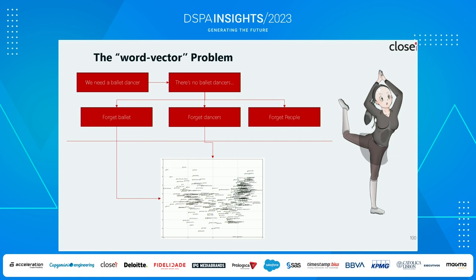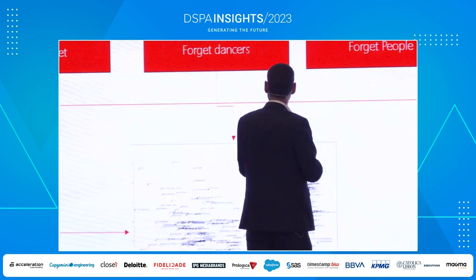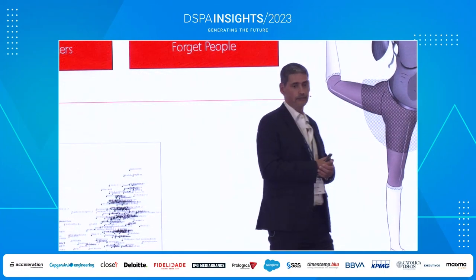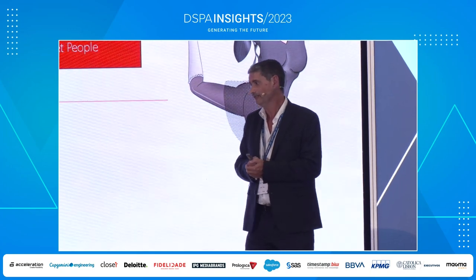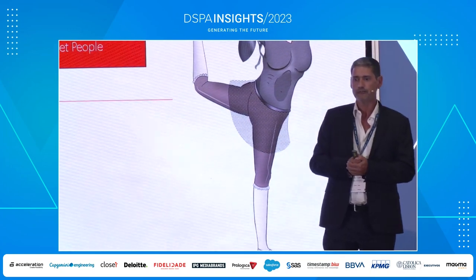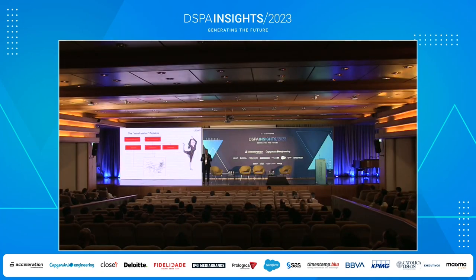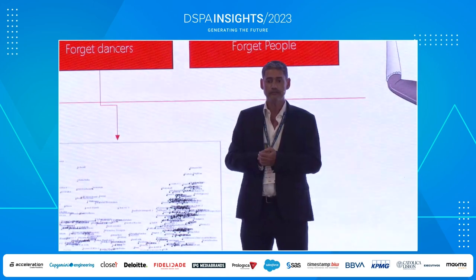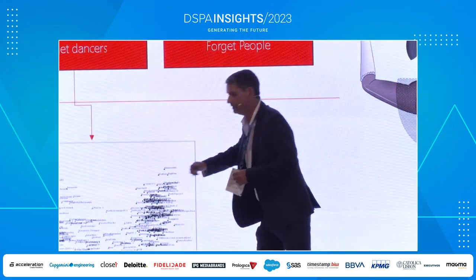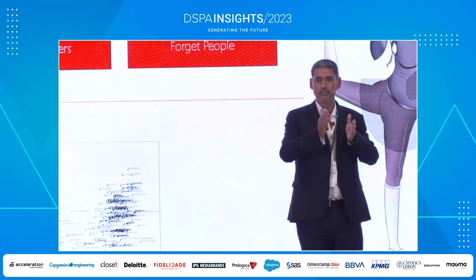The first I call the 'world vector problem': imagine you need ballet dancers and there are no ballet dancers. You have three choices — forget the ballet dancer, hire someone who knows ballet but doesn't dance, or hire someone that dances but doesn't know ballet. If you are a bank trying to hire the next branch manager, all the people you have were never branch managers. You want to know what skills interconnect to identify who would be the best branch manager — and to do that you need to take all the skills and put them into a mathematical form.